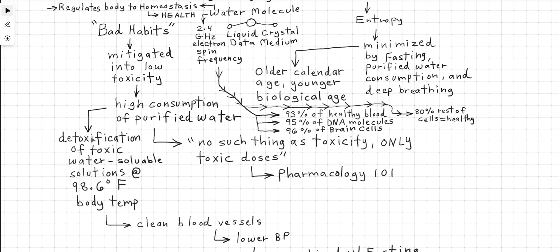Bad habits can be mitigated into low toxicity through high consumptions of purified water with electrolytes. This then leads to detoxification of toxic water soluble solutions at body temperature 98.6 degrees Fahrenheit. We're talking about water soluble toxins. Most toxins people are exposed to are water soluble, but we're not talking about snake venom and cytokine storms and those types of things because they are not water soluble. Many will disagree that not all toxins are water soluble. That is very true. But most toxins people are exposed to are water soluble.